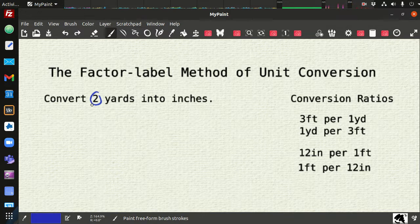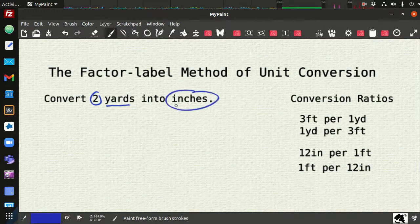but numeric values are meaningless unless there's some unit associated with it. What are we talking about, 2 dollars, 2 dogs? In this case we're talking about yards. So yards is our starting unit, and our destination unit here is inches. So we need to find some way to go from yards to inches.